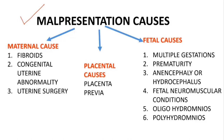The maternal causes include fibroids, especially in the lower segment of the uterus, congenital uterine anomalies, and uterine surgeries. The placental cause — the most common is placenta previa, because in placenta previa the placenta covers the lower segment of the uterus and does not allow the vertex to come down.